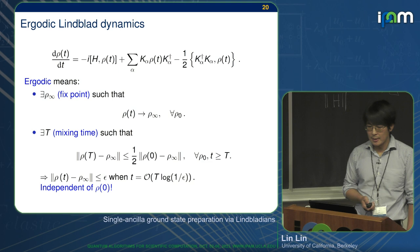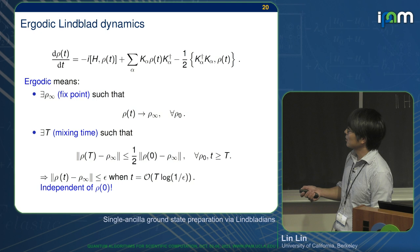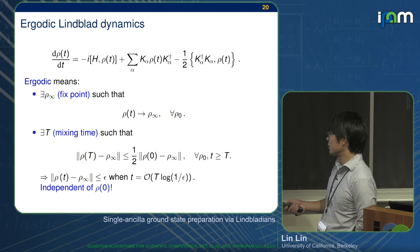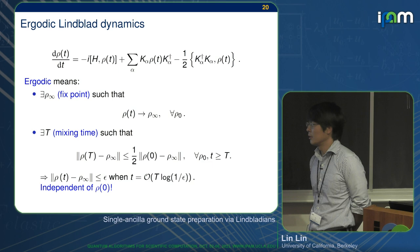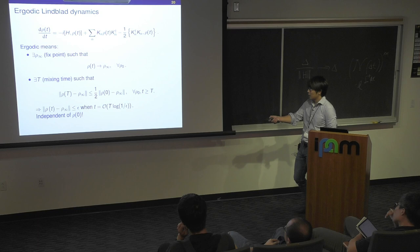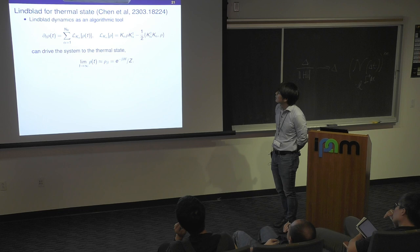Another concept is that we hope the Lindblad dynamics is ergodic, meaning first there exists a fixed point such that you start from anywhere and it converges to that thing. Two, hopefully there is a mixing time — and hopefully it's fast mixing, meaning T is poly N. That means you start from any rho zero; after this T, the difference between rho and the fixed point is half the original difference. You can easily boost this to epsilon precision by running to T log(1/epsilon), and the importance is that once this is satisfied, it really doesn't matter where you start from.